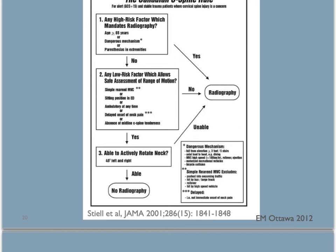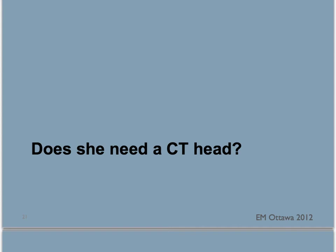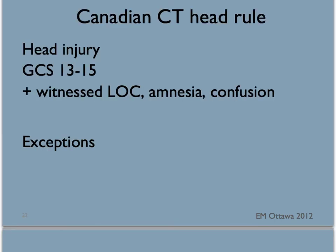Using this C-spine rule, you can decide on whether the patient needs an x-ray of their C-spine. How about a CT scan of the head for this patient? We will use another clinical decision rule, the Canadian CT head rule. This rule applies to patients who have sustained a minor head injury with either witnessed loss of consciousness, amnesia, or confusion. Their GCS has to be between 13 and 15.